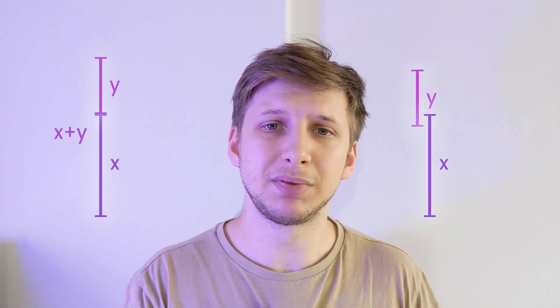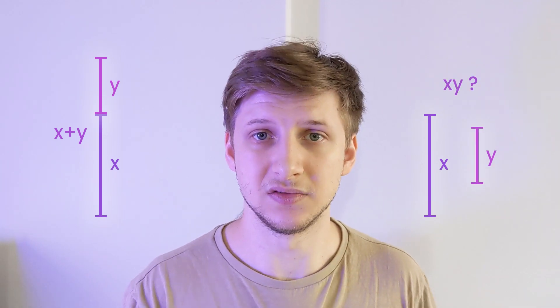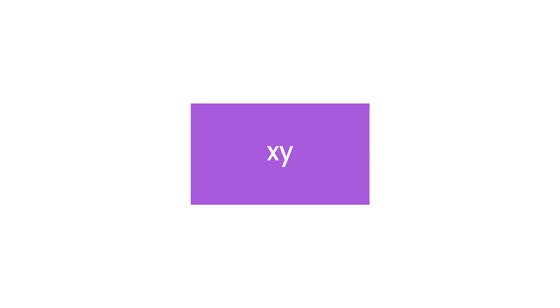By which I mean multiplication of lengths of these two segments. Of course, it can be easily represented as an area of a rectangle with segments as its sides, but I wanted to know if there is any way to draw x times y on a number line when x and y are given.